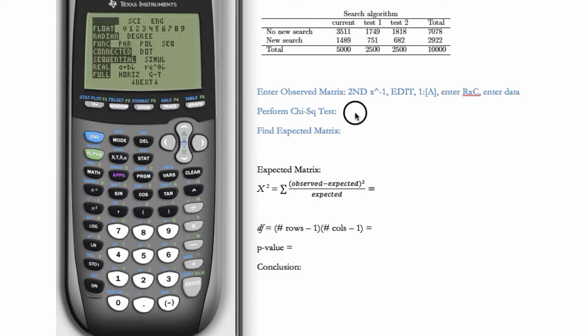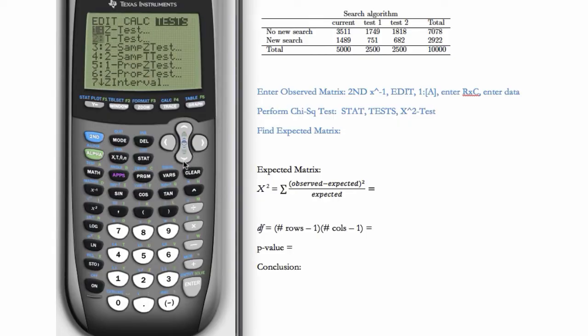And now we're ready to perform the chi-squared test. So to perform the chi-squared test, we'll go to stat, tests, and find the thing that says chi-squared test. So stat, tests, scroll down. And here we want the regular chi-squared test, not the goodness of fit test. So we'll choose this one here, chi-squared test, and hit enter.